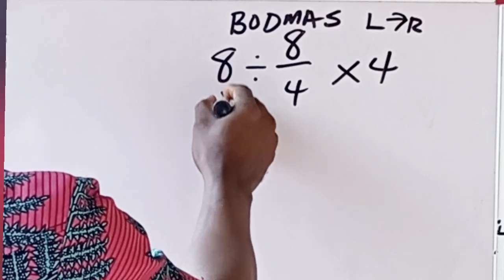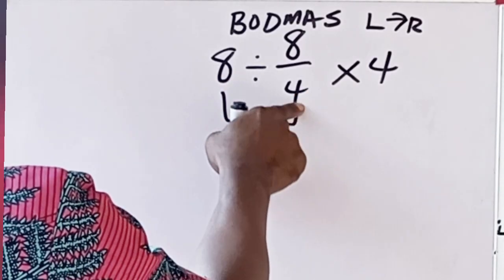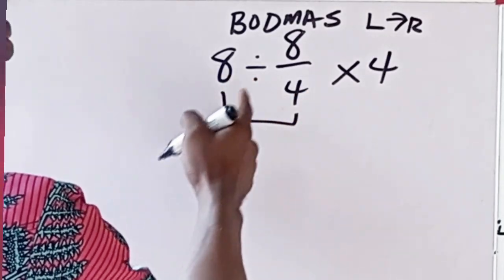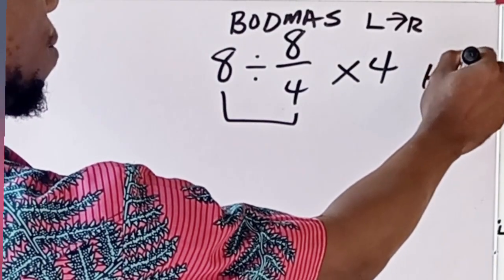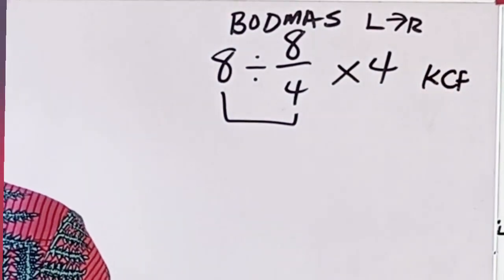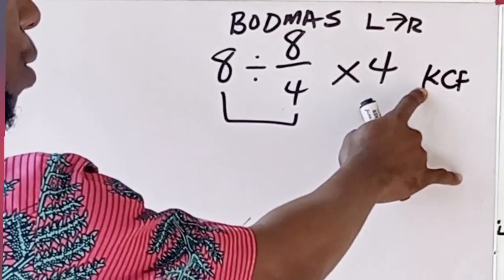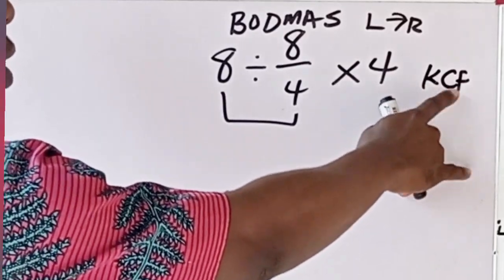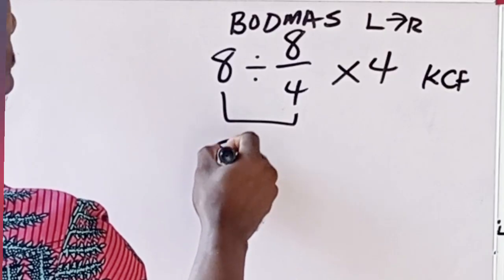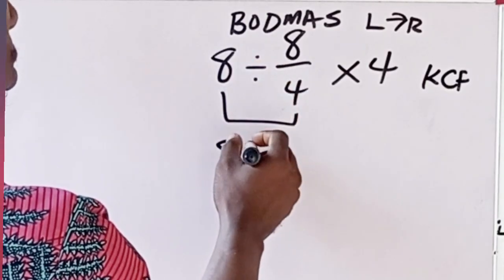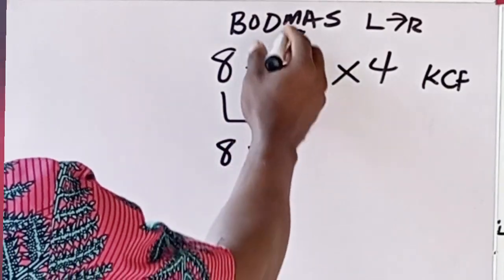So we'll do this division first, and before we do this division, there is a rule we will apply here. The rule is called KCF rule. This K stands for keep, C stands for change, F means flip. So we are going to keep it, then change division to multiplication, then we'll flip this - it will be 4 over 8 times 4.